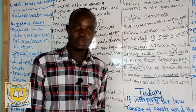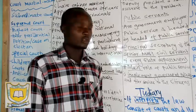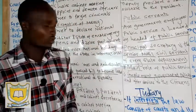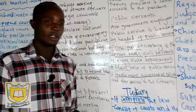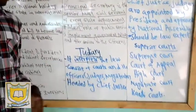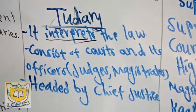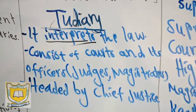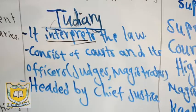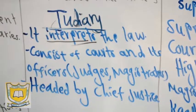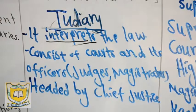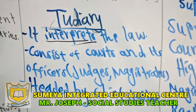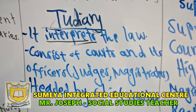The judiciary will make you know that you need to obey the law. When you go to the court of law, they will keep on referring to the constitution — that article number says this and this, you have gone against this. So interpretation of the law is the role of the judiciary. It consists of courts and officials of the courts like judges, magistrates, and so on.